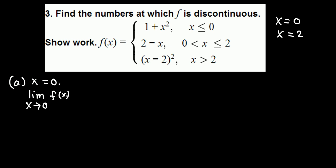As x approaches 0, it can come from either the left or the right. From the left side, x is less than 0, so we use the first piece: 1 plus x squared. From the right side, x is greater than 0, so we use the second piece: 2 minus x. Because of these two different pieces, we need to consider one-sided limits.